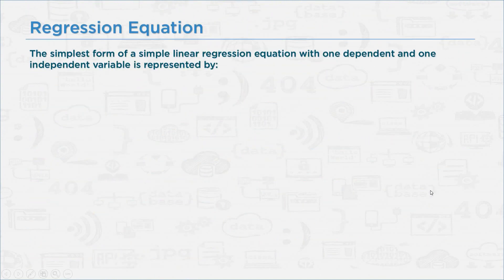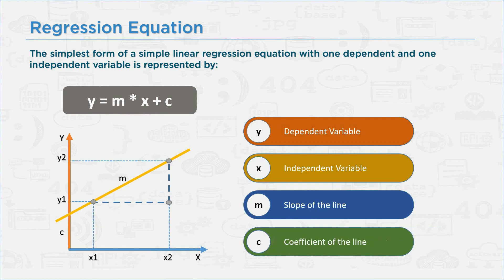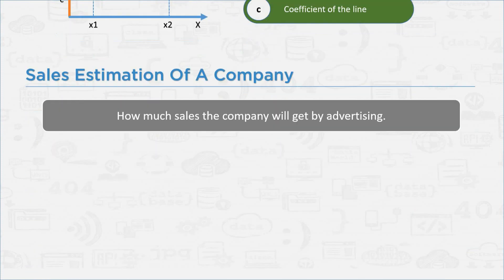Let's see the regression equation. The simplest form of a simple linear regression equation with one dependent and one independent variable is represented as y equals mx plus c. From the graph, y is the dependent variable, x is the independent variable, m is the slope of the line, and c is the coefficient of the line.